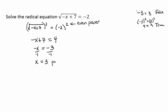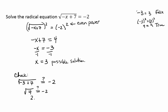x equals 3 is a possible solution, but we have to check. We plug back into the square root, putting in 3 for x: square root of negative 3 plus 7 — is that equal to negative 2? That's the square root of 4, which means 2 equals negative 2. Definitely not. So the solution set is empty — no solution. You could write 'no solution,' the empty set symbol, or just empty brackets.